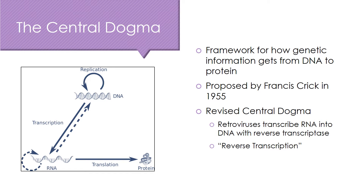Once this was discovered, the central dogma was revised to include reverse transcription. The image here depicts the idea that DNA can replicate itself, it can be transcribed into RNA, and that RNA can be translated into a protein. The dotted line shows that reverse transcription, where RNA is transcribed into DNA, can also take place. What I want you to know is basically DNA encodes RNA, RNA encodes proteins, and know that reverse transcription is a thing. We're going to talk about that more later this semester.